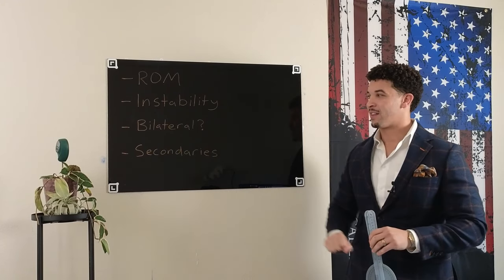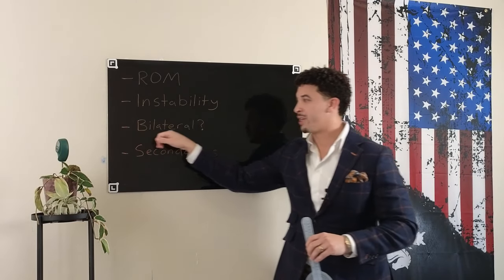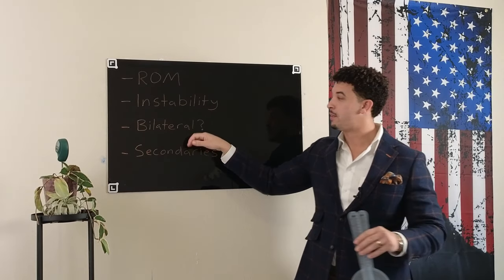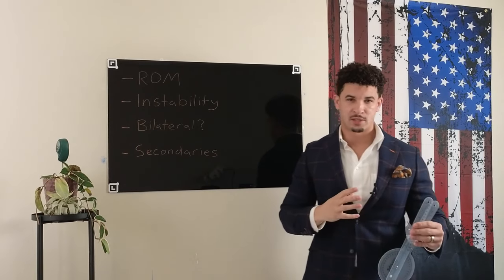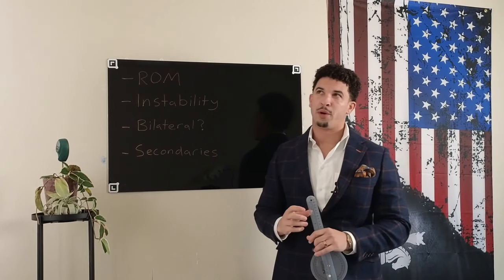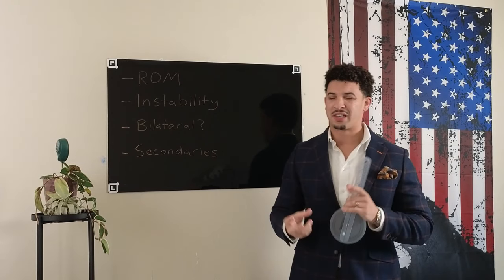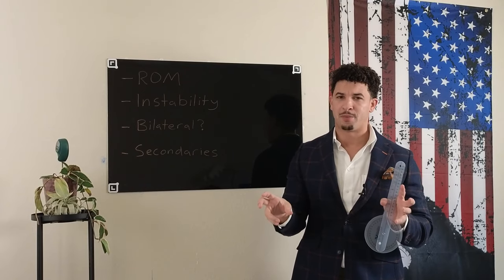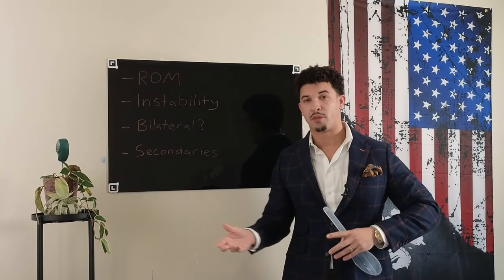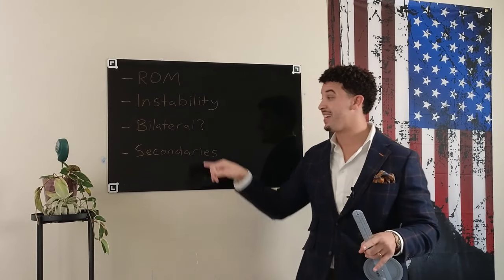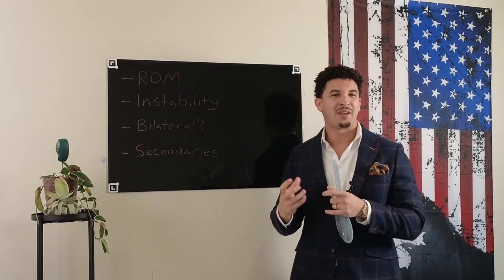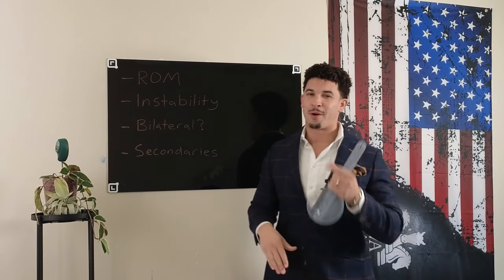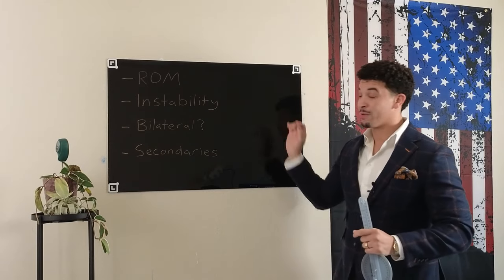Last thing I'll leave you with: when you do get rated bilateral — meaning both knees — there is a certain bonus that you get called the bilateral bonus. It's essentially a small multiplier because you have something on both sides of your body — both arms, both shoulders, both knees in this example. You get a bit of a bonus where it's actually more than the sum of its parts. There's a little tidbit for you.